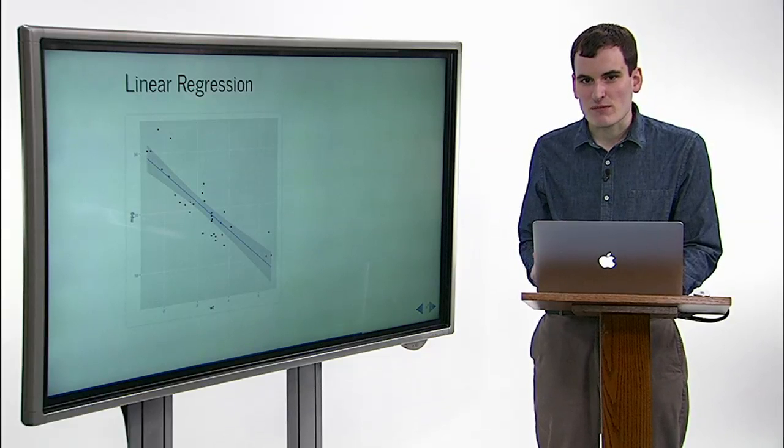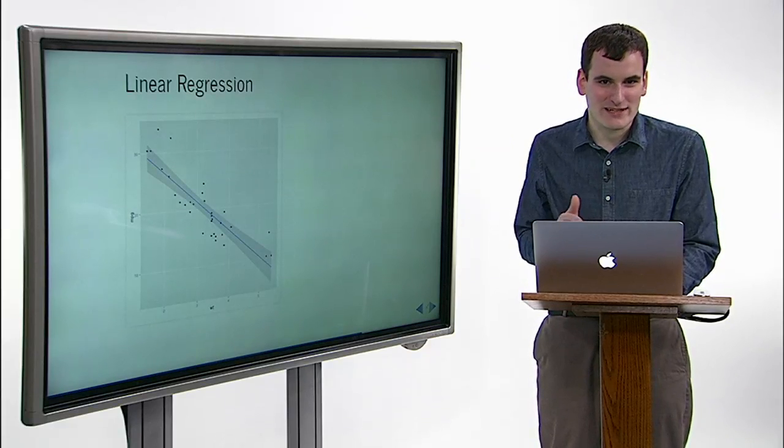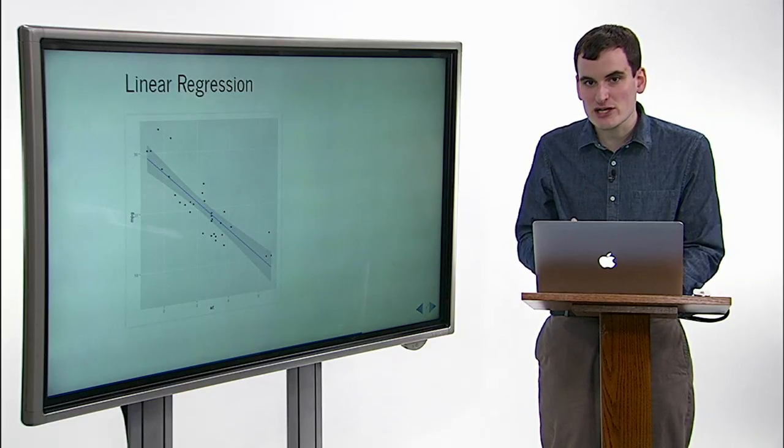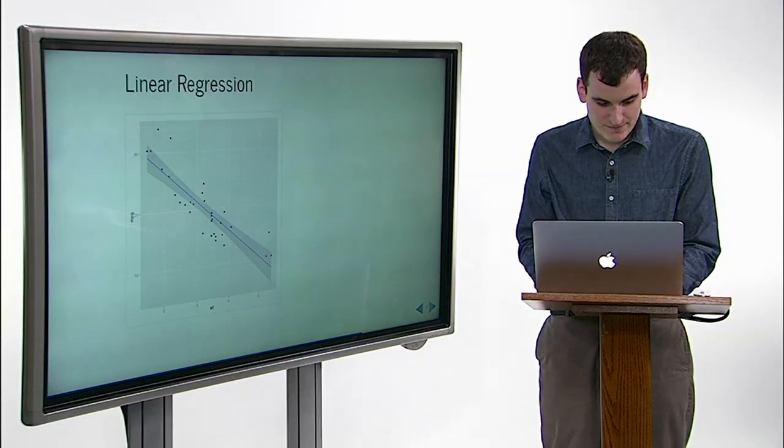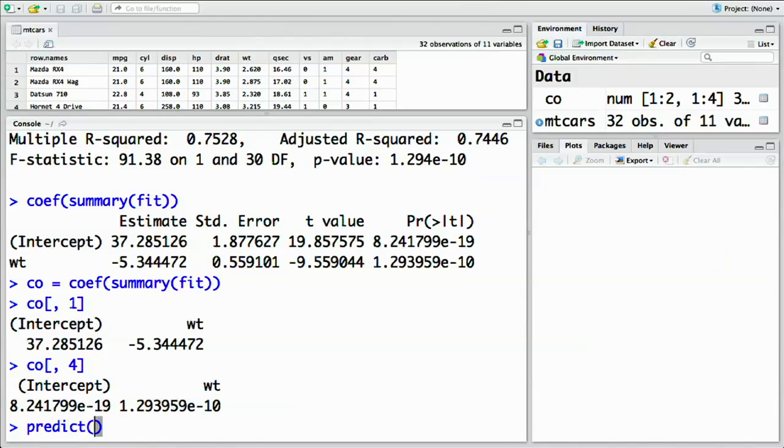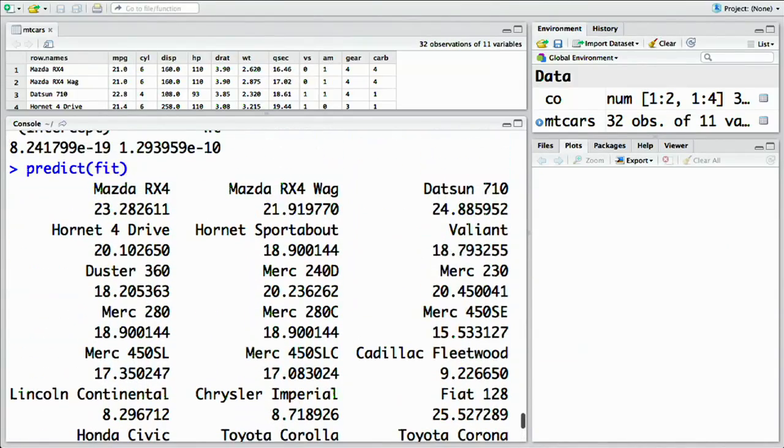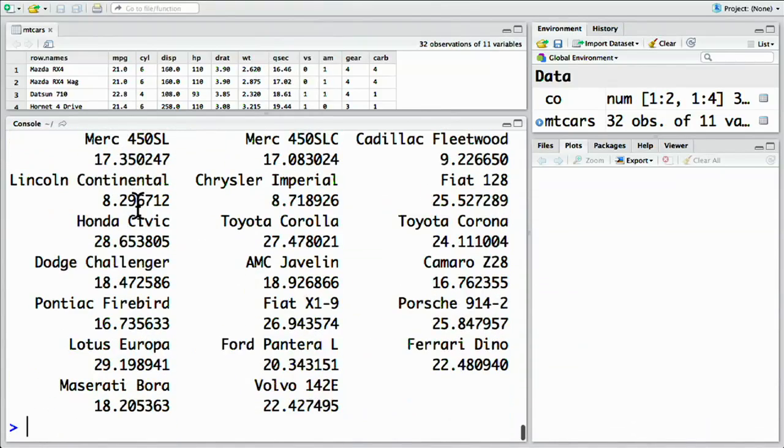The advantage of a linear model is that it can be used not only for statistical testing, but also for prediction. This model predicts a gas mileage for each of our existing cars using the predict function. Predict of fit. You'll notice that for each of these cars that we have, we get one prediction of the miles per gallon based on this linear fit. Now, these predictions aren't really that useful to us because we already have the actual gas mileage of each of these cars.